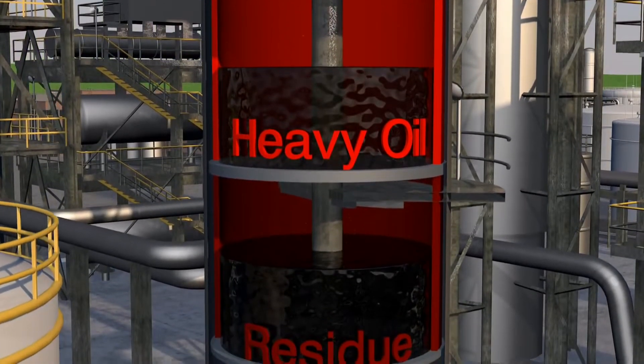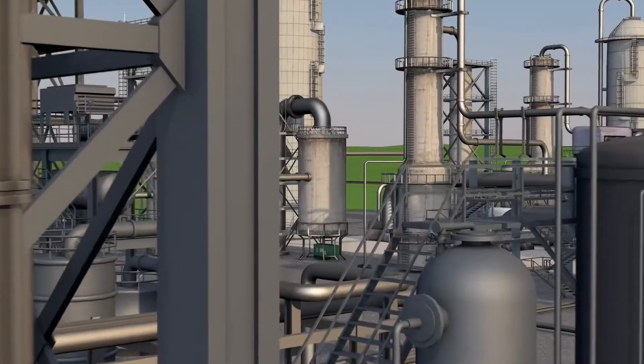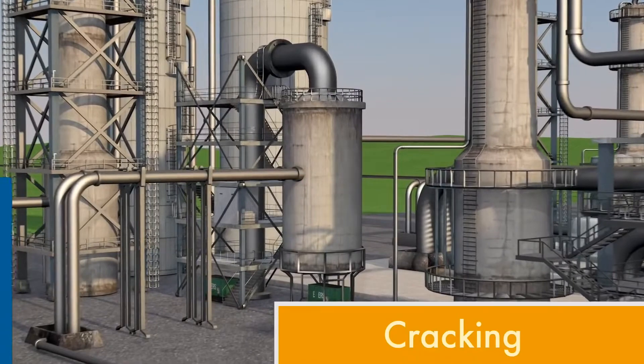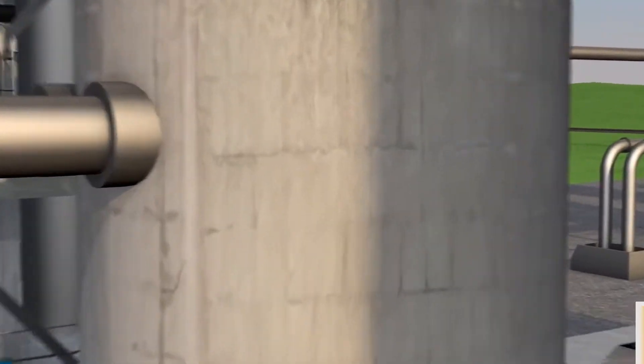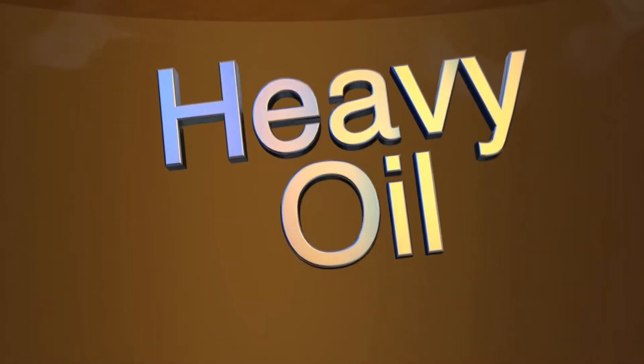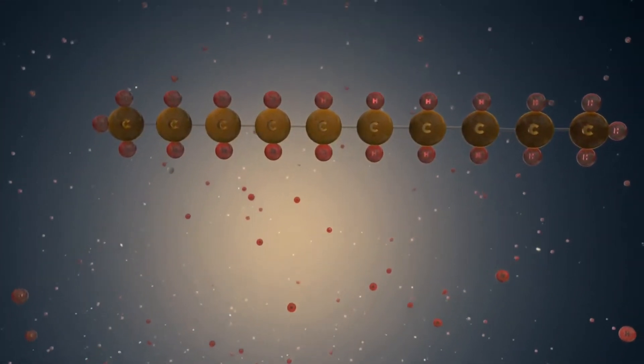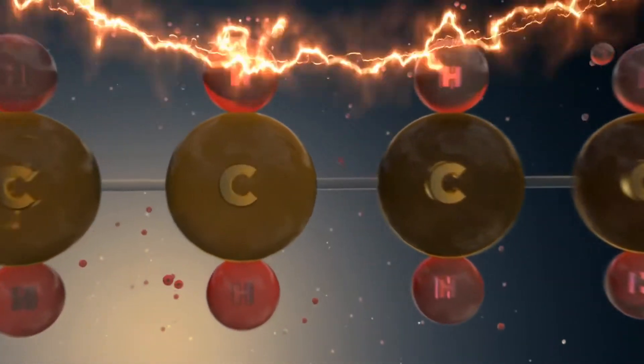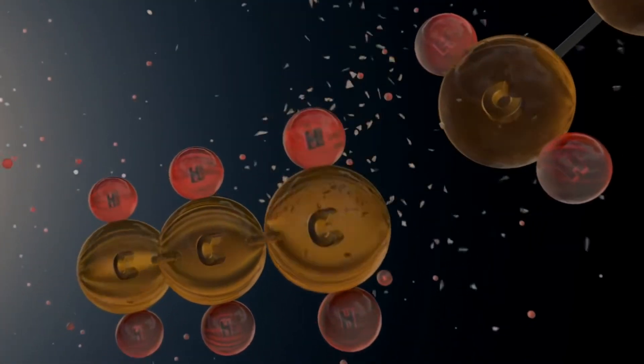A process called cracking is used to maximize the usefulness of heavy oil. Heavy oil has long strings of carbon and hydrogen molecules. Using a catalyst, these molecules can be broken into smaller chains, transforming the heavy oil into lighter, more valuable fluids.